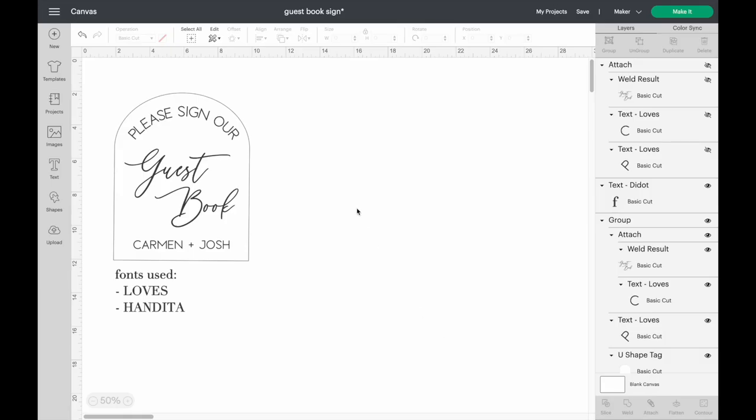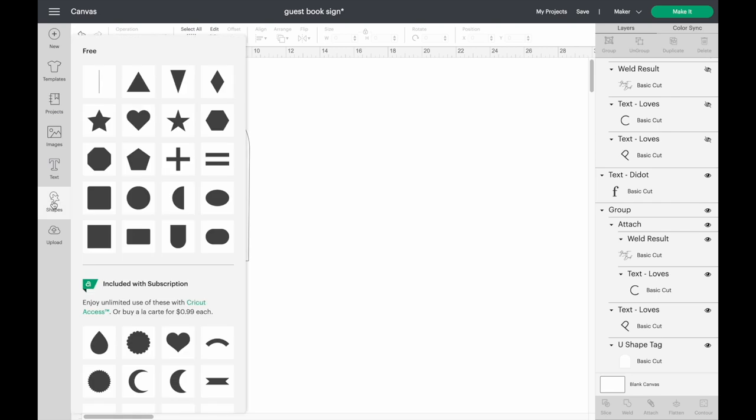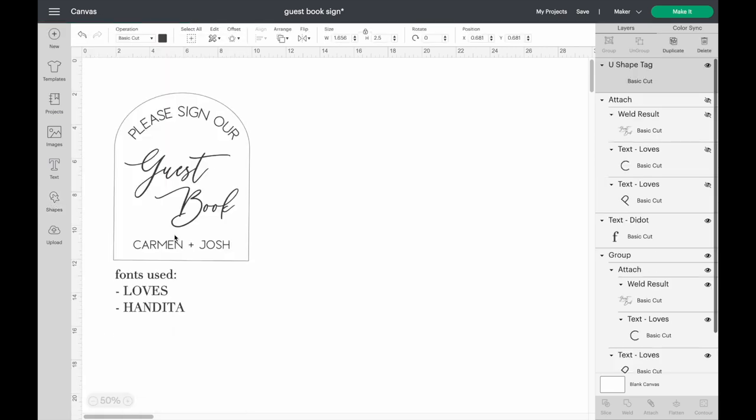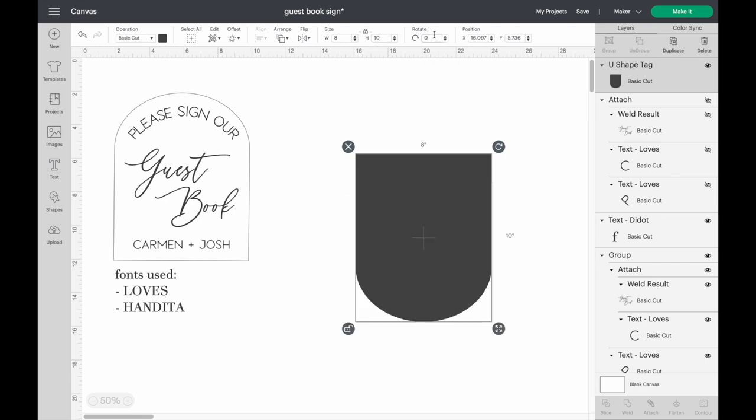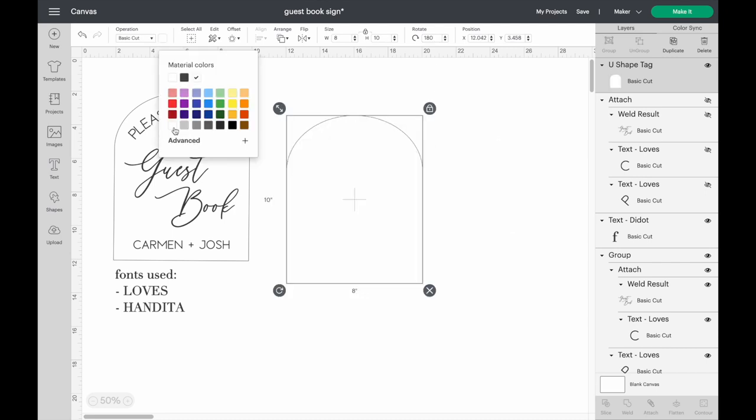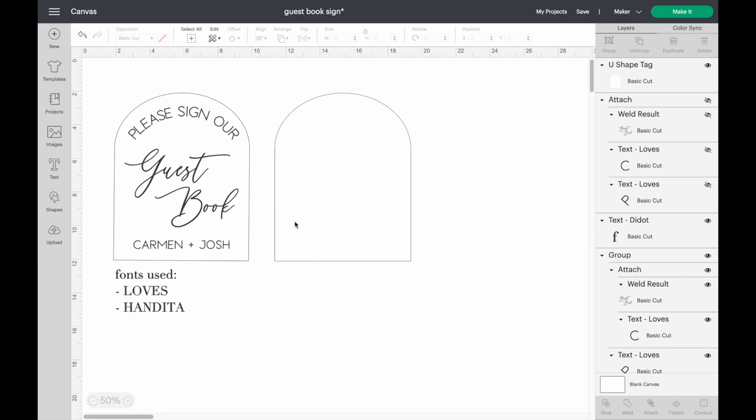The first thing we're going to do is go ahead and go into our Cricut software and open up a new project. Here I just have the design that we're going to be doing today. I also have the fonts here that we're going to be using. The first thing we're going to do is go ahead to the shapes button and we're going to get the arch. Now we're going to change the size to 8 by 10. The way we're going to do this is click this unlock button here, go up to the width and we're going to make it 8, and then the height is going to be 10. Now we want to rotate this 180 degrees, and then we're going to change the color to white.